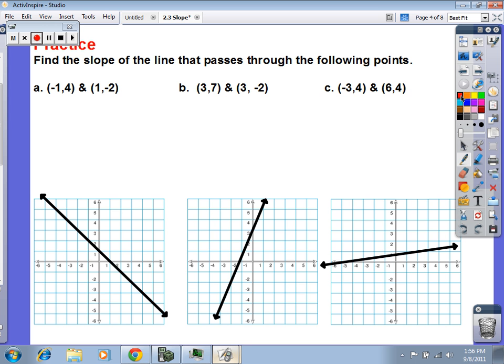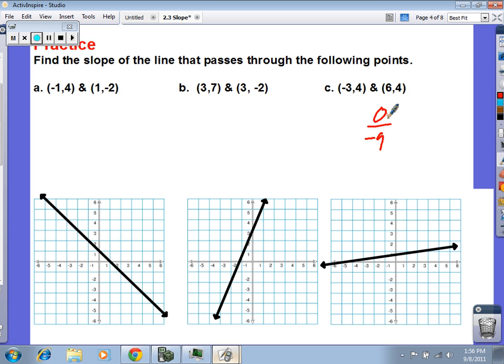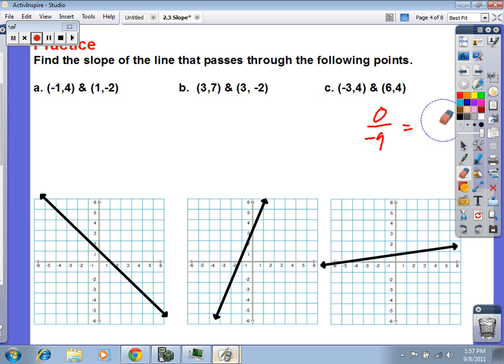What's the question? C? Did you get 0 over negative 9? Is that what everybody got? What's 0 divided by negative 9? Zero. So m equals 0 which is what kind of a line? Flat or vertical? Flat. Okay. Let's look at the picture.